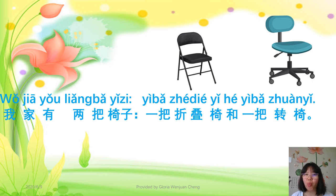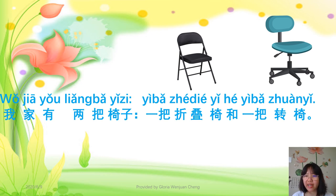句子. Example sentence: 我家有两把椅子，一把折叠椅和一把转椅. 我家 here means 我的家, my family — you can omit 的. 有 means to have. 两 means two. 把 is a measure word; in front of a measure word we use 两 instead of 二. So 两把椅子 means two chairs. 一把折叠椅, one folding chair, 和 means and, 一把转椅, one revolving chair. 再一遍: 我家有两把椅子，一把折叠椅和一把转椅.